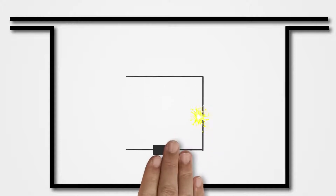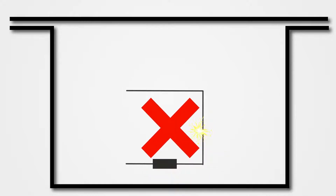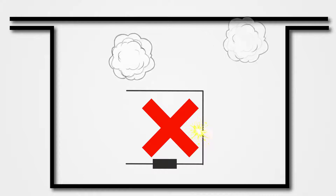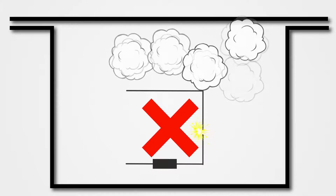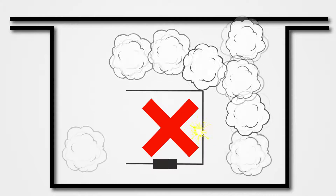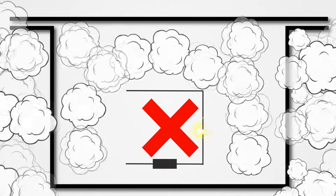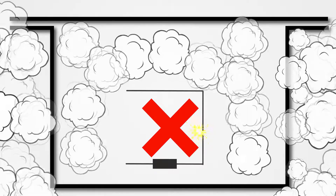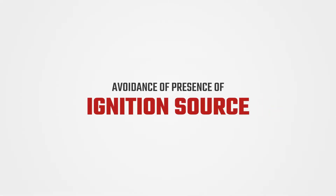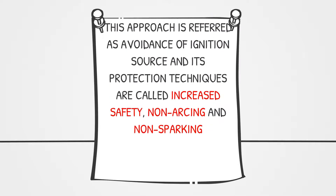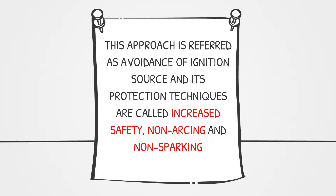And finally, some electrical devices and their components are, by design, non-arcing. They do not contain any arcing or sparking parts, and all hot surfaces are identified and controlled to be less than the ignitable temperature of the surrounding gas. There are no sources of ignition inside the device's enclosure, so this technique is called avoidance of presence of ignition source. This approach is referred to as avoidance of ignition source, and its protection techniques are called increased safety, non-arcing, and non-sparking.